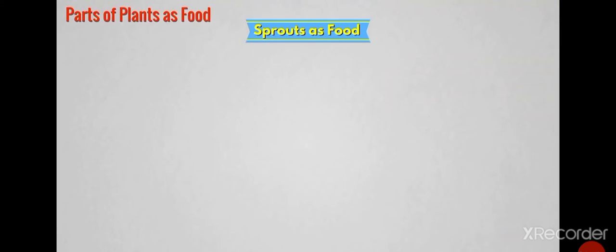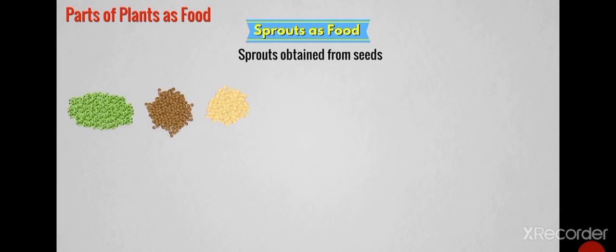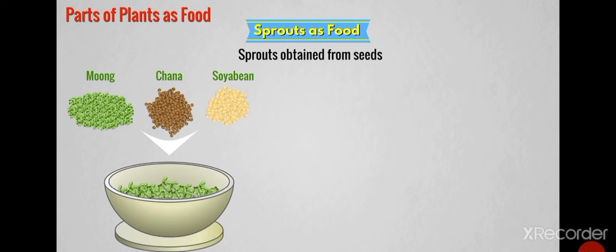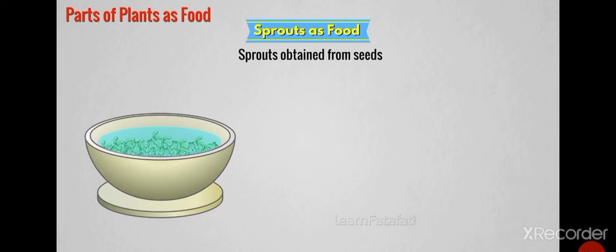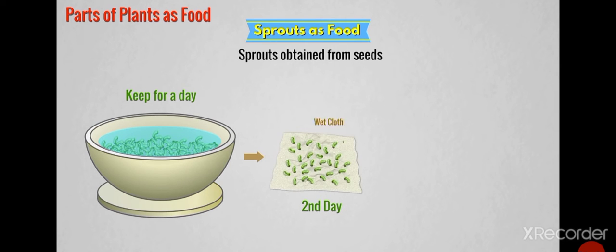We all eat food made from sprouts. Do you know how do we obtain sprouts? These are basically obtained from seeds. The seeds of plants such as moong, chana or soybean are kept in a vessel having bigger opening. Put sufficient water in the vessel. Keep it as it is for a day. The next day, remove water completely from the vessel.